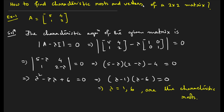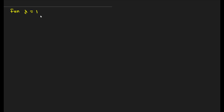Now the next part is very important where we have to find the characteristic vector. Since we have two values of lambda, we will get two vectors. Let us find them one by one, starting with lambda equals 1.